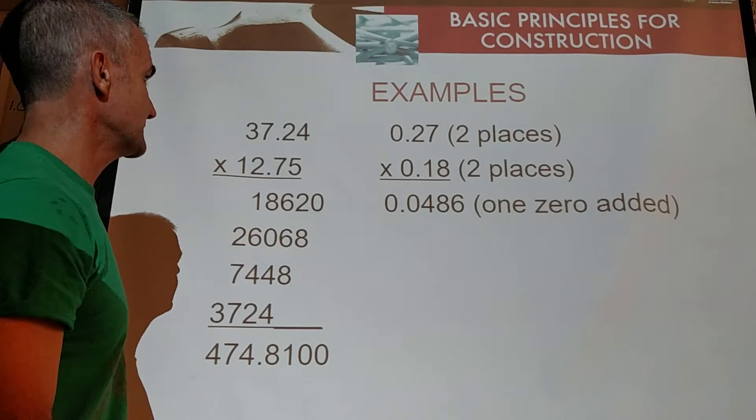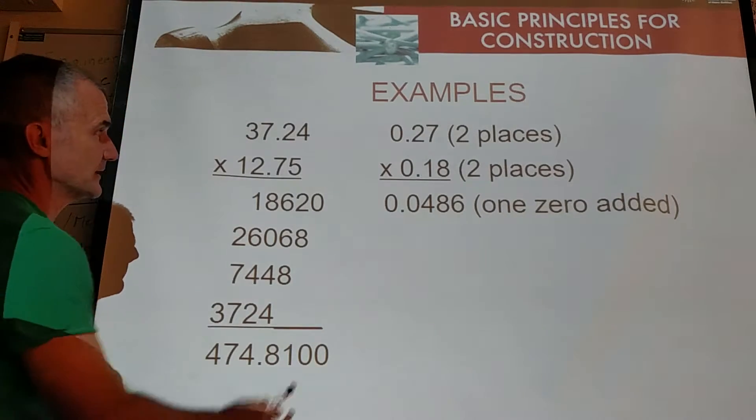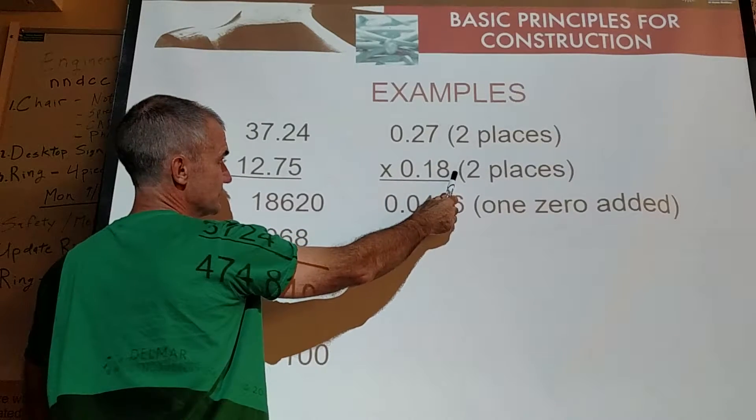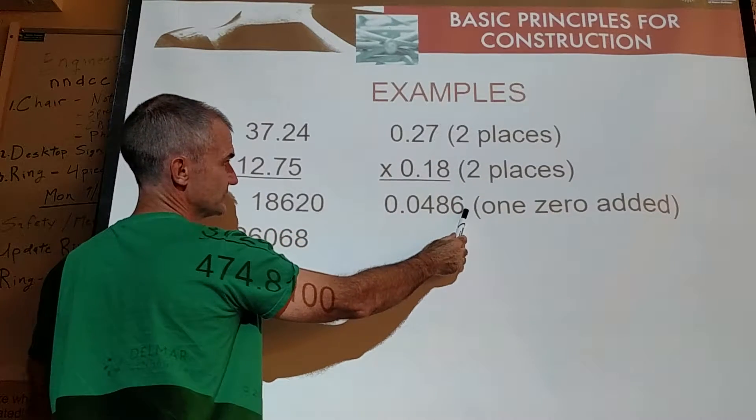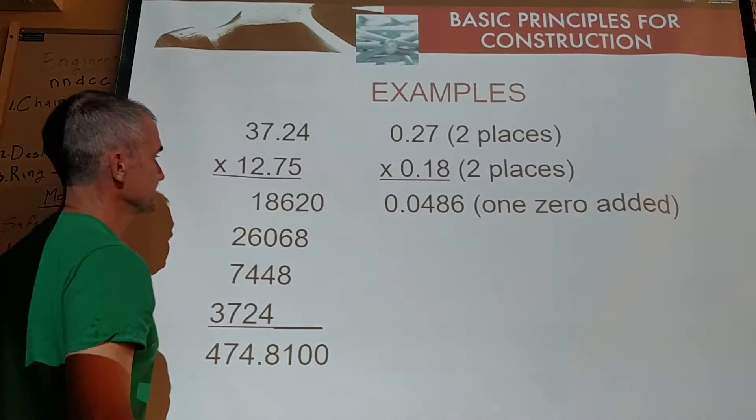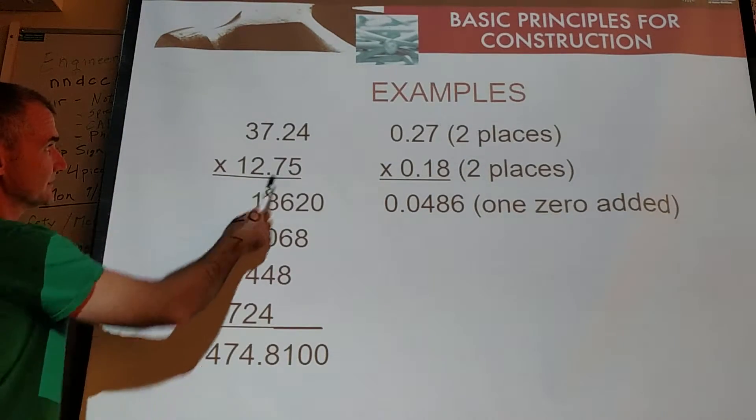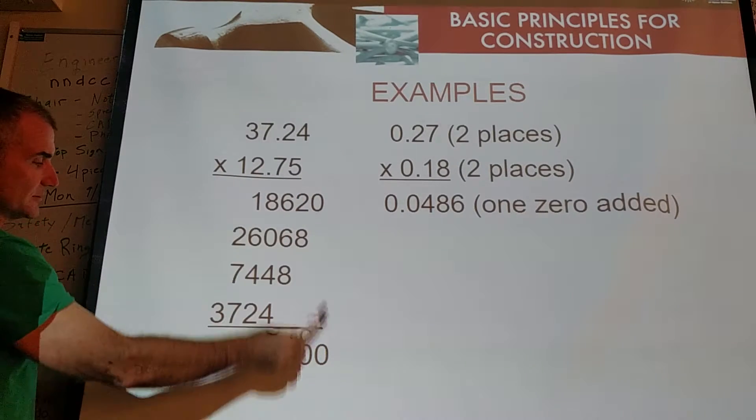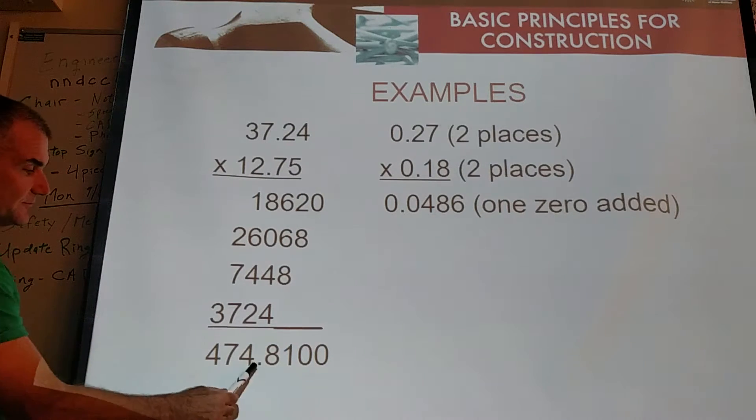So here's an example. Here I'm multiplying. Multiply these numbers together. I'm over 1, 2, 3, 4. So my final answer is over 1, 2, 3, 4. Same thing here. 1, 2, 3, 4. I'm over 1, 2, 3, 4.